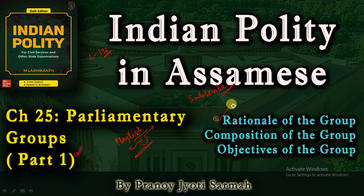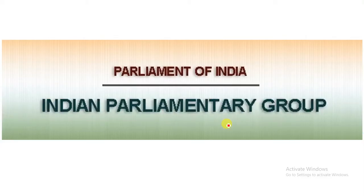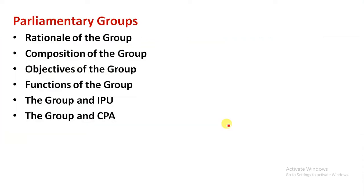Today I will mainly discuss the rationale of the group, the composition of the group, and the objectives of the group. This topic will be discussed. So this is Chapter 9 — Indian Parliamentary Group. I will discuss the main point, the protective point, the sub-point, and the sub-sub-point.